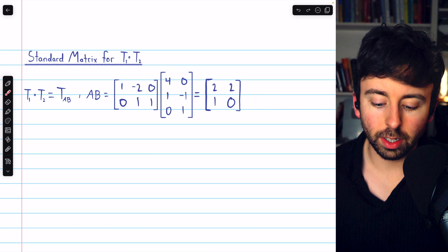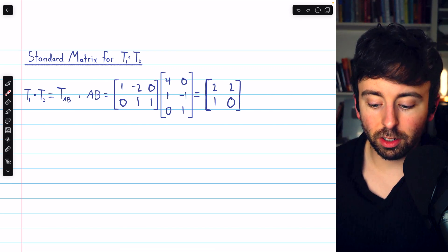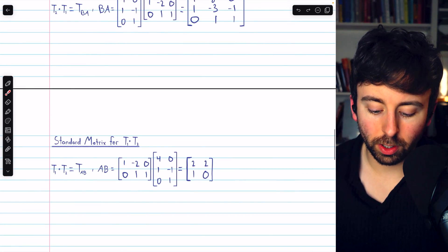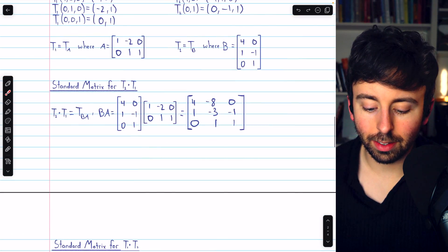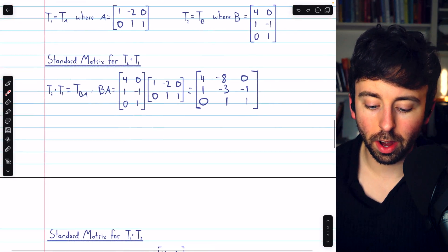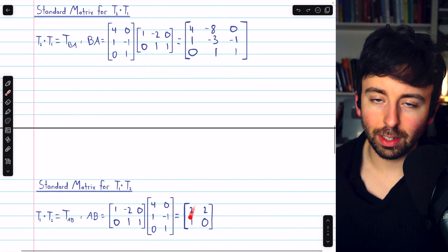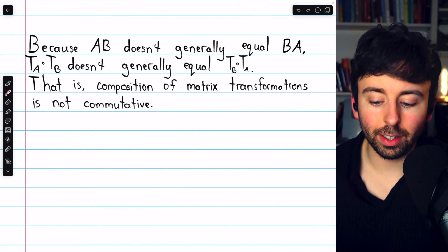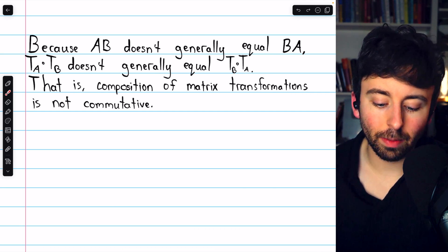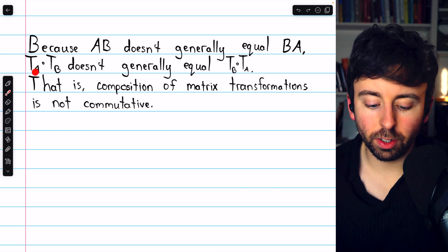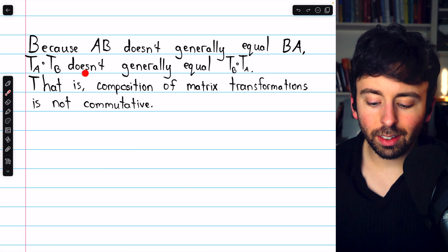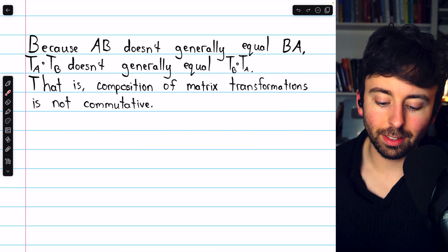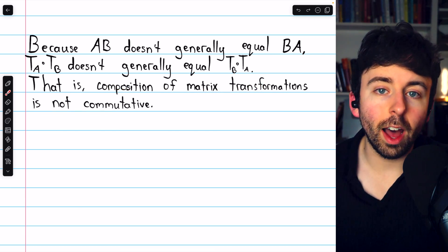The effect of composing T1 and T2 on a vector x is to multiply that vector x by this standard matrix. Certainly, T1 circle T2 is different from T2 circle T1 — we can see their standard matrices are different, so the order does matter. Since AB doesn't generally equal BA, matrix composition TA circle TB doesn't generally equal the opposite order TB circle TA. That is, the composition of matrix transformations is not commutative.